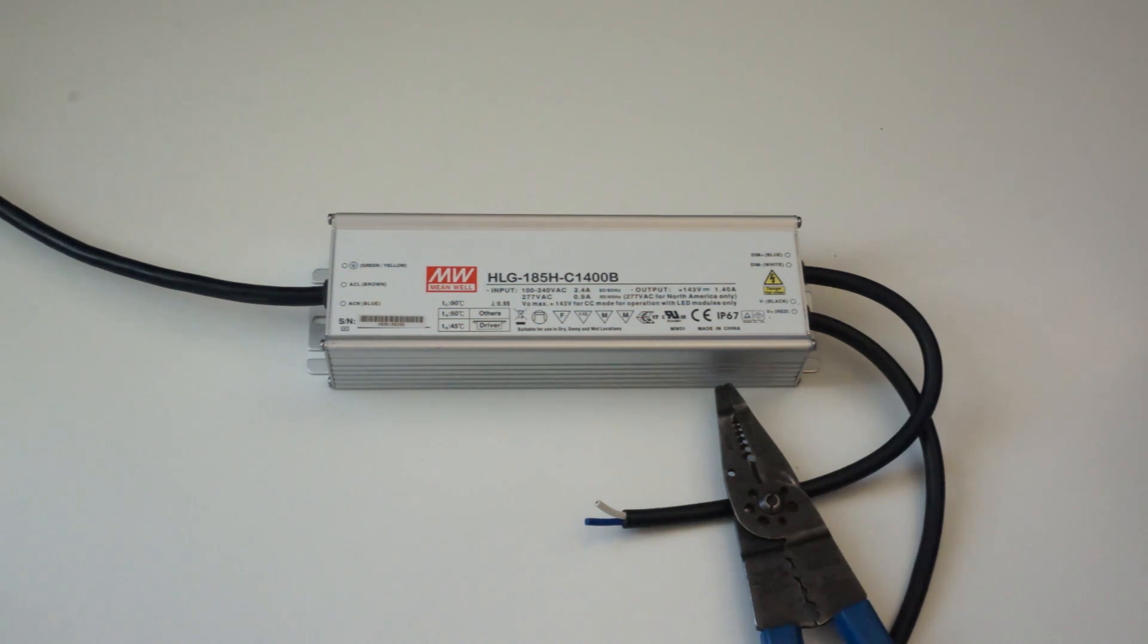Now the first thing you need to do is make sure you've ordered the right driver. There are two flavors of HLG drivers: A type or B type, indicated by the last letter in the part number. Here I've got a C1400B. The B means you get the dimming leads, this blue and white conductor that you see in the video.